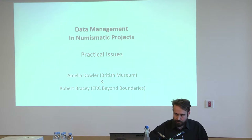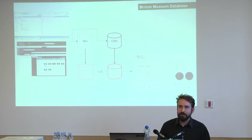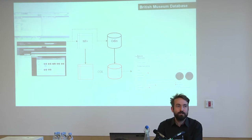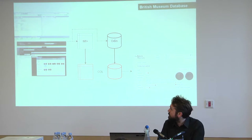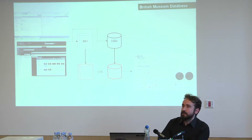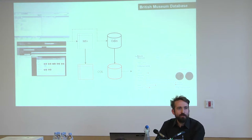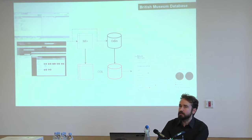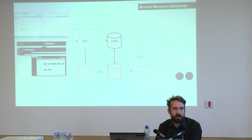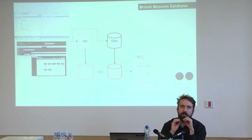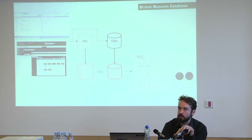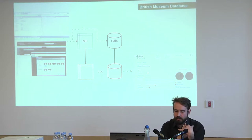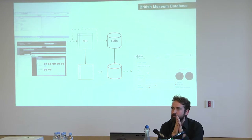I'll begin by introducing the British Museum's database, which is the one I've primarily worked with during the project. The BM database consists of four different databases. One manages the metadata associated with objects — once called Magus, then Merlin, and now called MI Plus.